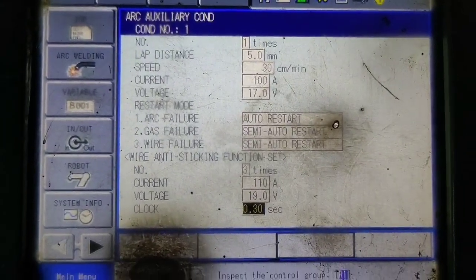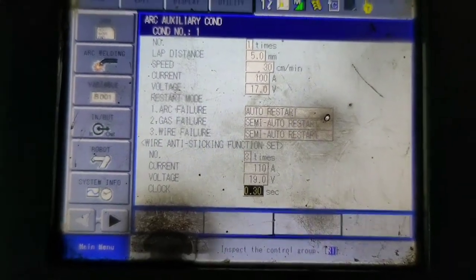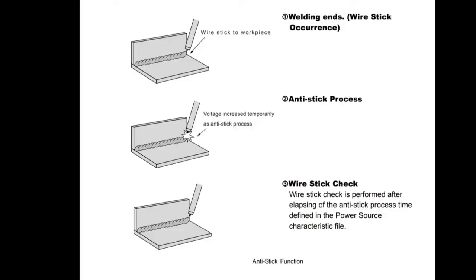Now we have come on that theory. You see that in this diagram, wire stick check is performed after elapsing of the anti-stick process time characteristic file.